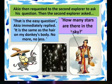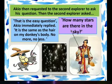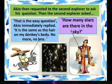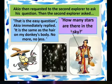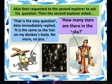Akio then requested the second explorer to ask his question. The second explorer asked: how many stars are there in the sky? It means he asked for the correct number of stars in the sky.